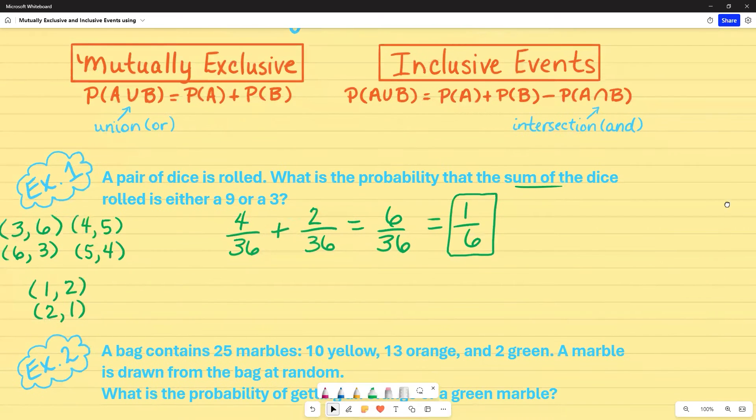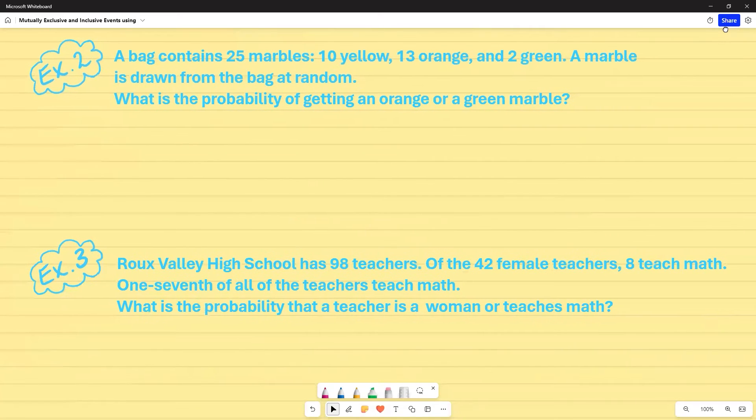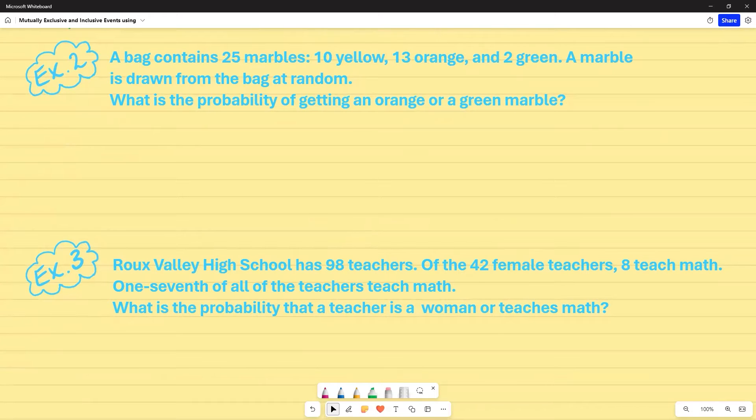And again, if I started out with fractions, then I want to end with my answer as a fraction, unless the directions say otherwise. So for example two, I'm talking about marbles and it says that a bag contains 25 marbles, 10 yellow, 13 orange, and two green. A marble is drawn from the bag at random. What is the probability of getting an orange or a green marble? So I can go ahead and start out my first fraction with 25 as my total, because that's how many marbles are in the bag. And out of that, I'm asked about orange, so there's 13 orange. So 13 out of 25. And then it says or, so that tells me to add because I'm using addition rule or green. So how many green do I have? I have two out of 25.